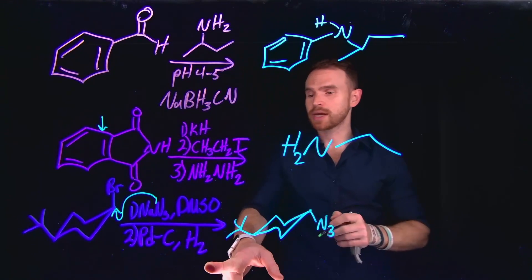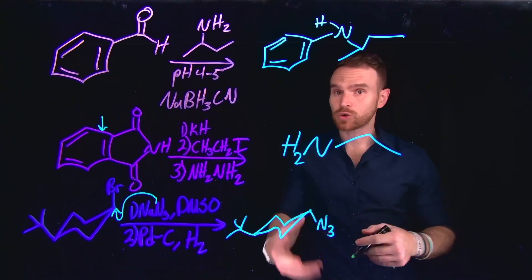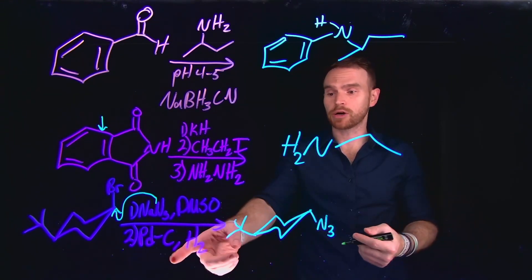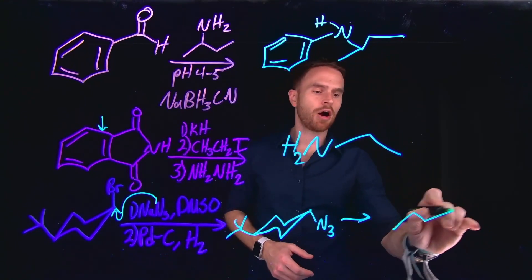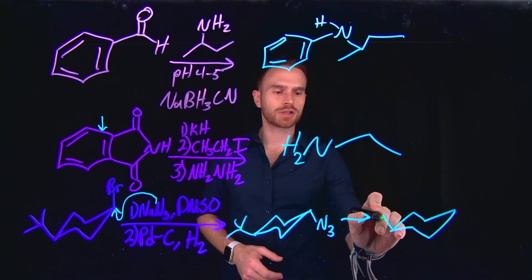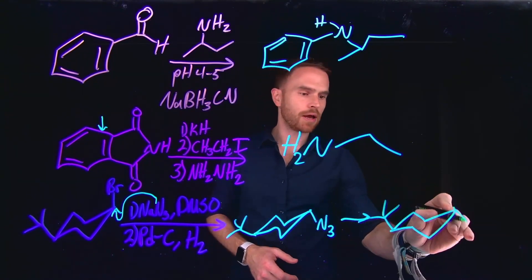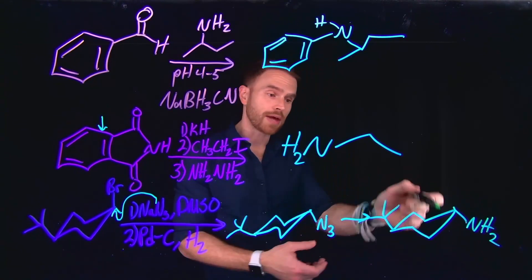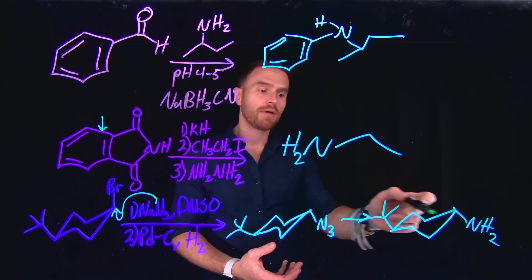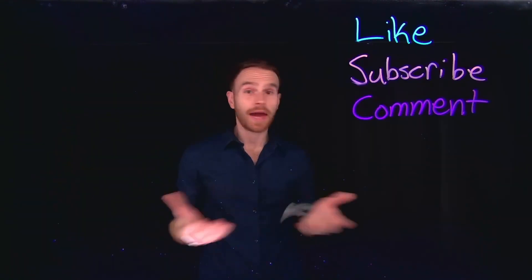And then the second step is actually how we reduce this azide down to a primary amine. So palladium on carbon in the presence of hydrogen gas, that is going to give us our final product, which is going to be that primary amine. And notice that it is going to be pointing in the down position or the equatorial position of our cyclohexane ring.